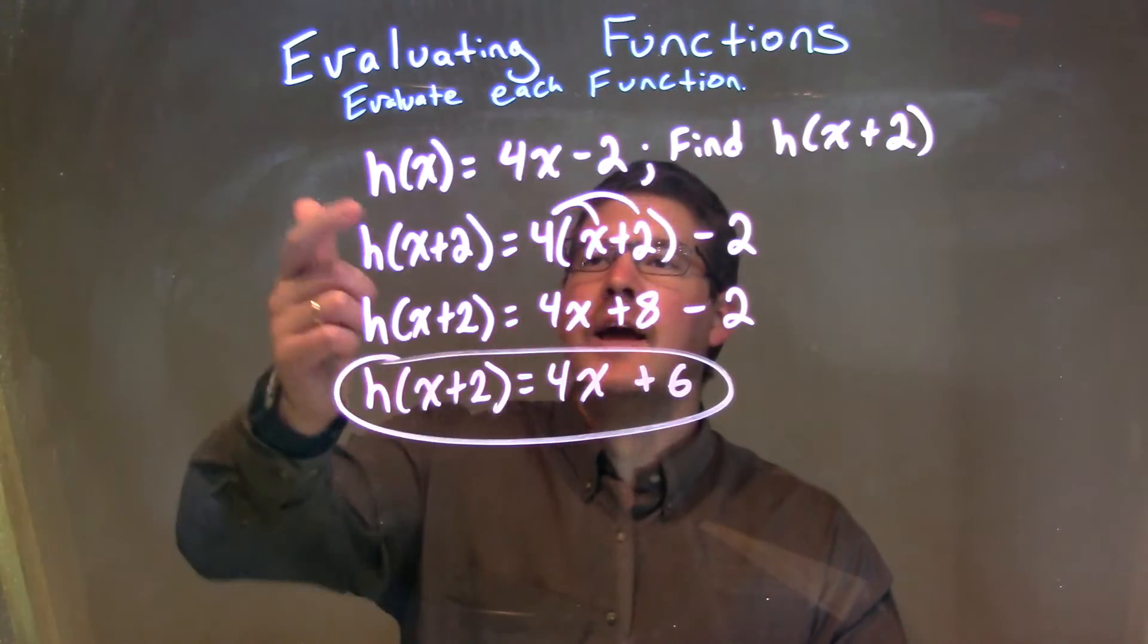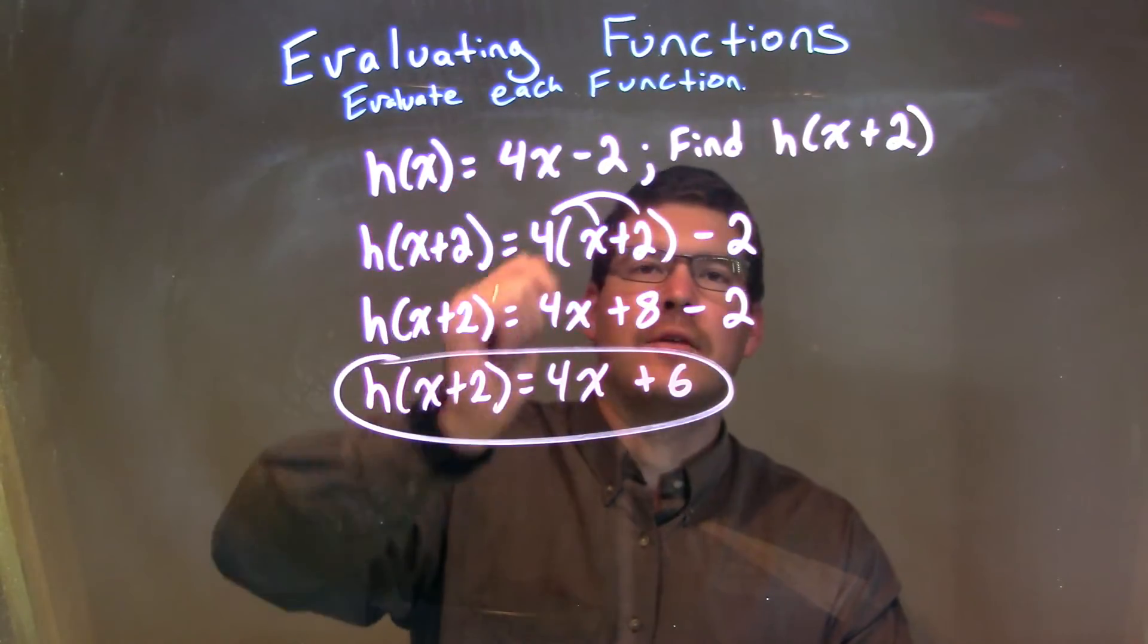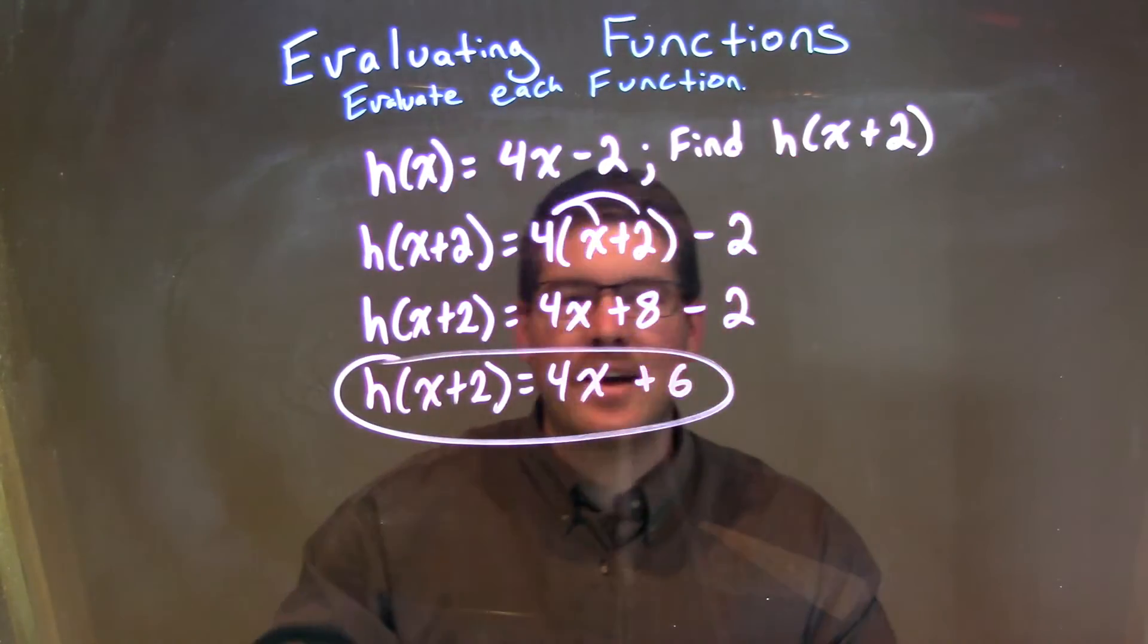So, let's recap. We're given h of x is equal to 4x minus 2, and we need to find h of x plus 2.